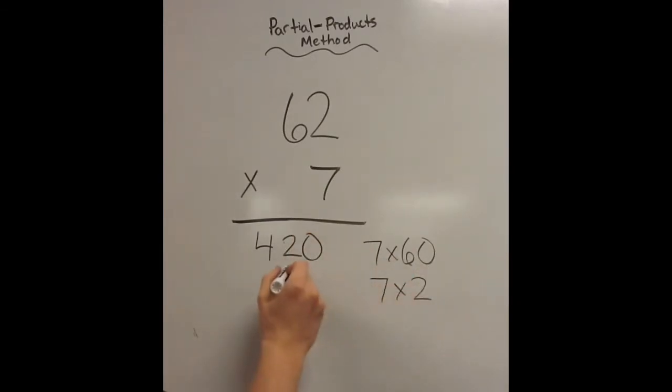Likewise, I know 7 times 2 is 14. And then it, like the traditional method, becomes an addition problem. So 4, 3, 4.